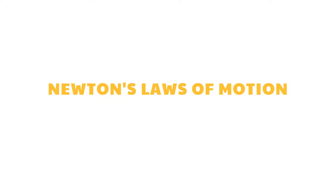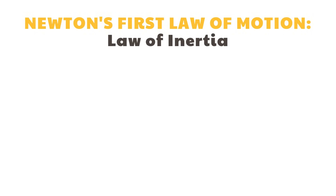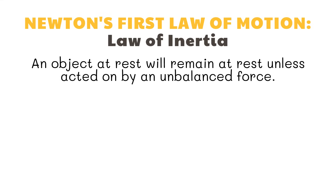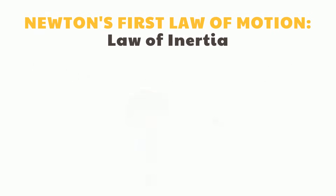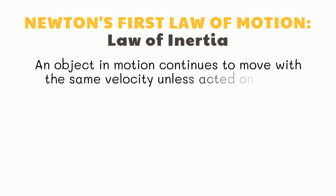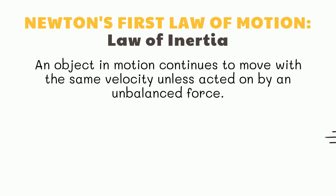Now that we already know the fundamental concepts of force and motion, we can understand Newton's laws of motion. The response of an object to changes in motion can be explained by Isaac Newton's first law of motion. It states that an object in motion continues to move with the same velocity unless acted on by an unbalanced force. This rolling ball will remain in motion when there is no friction or force stopping it.